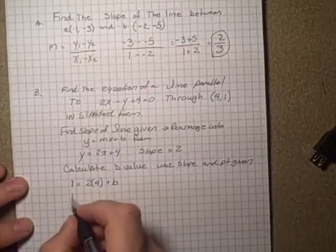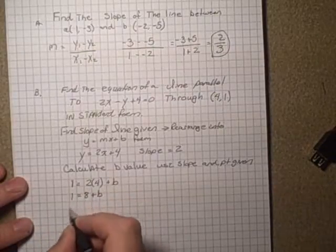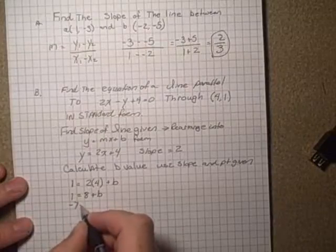So this would be 1 = 8 + b. Subtracting 8 from both sides, -7 = b.